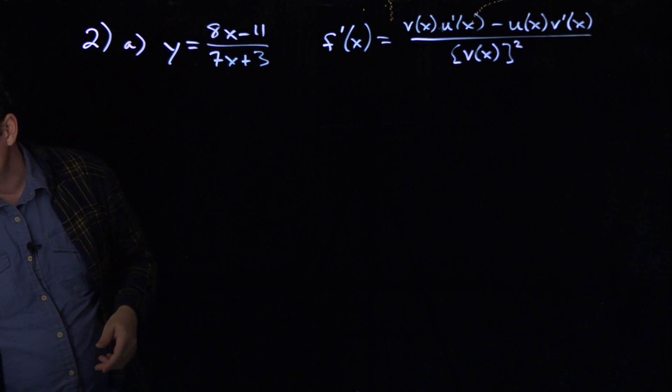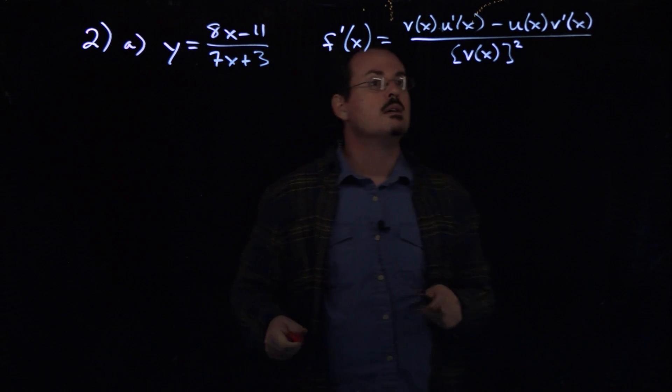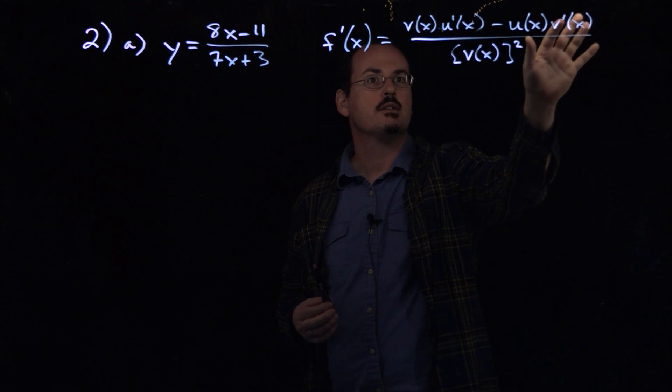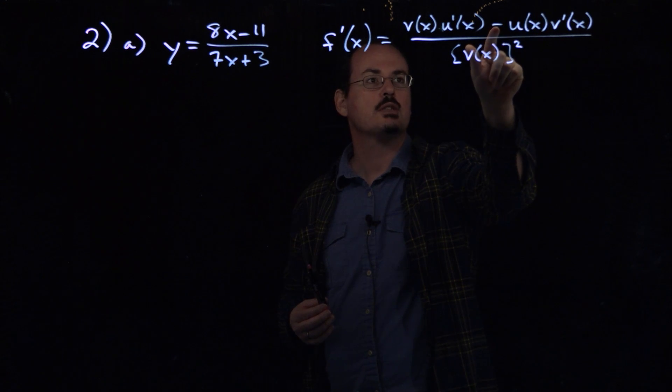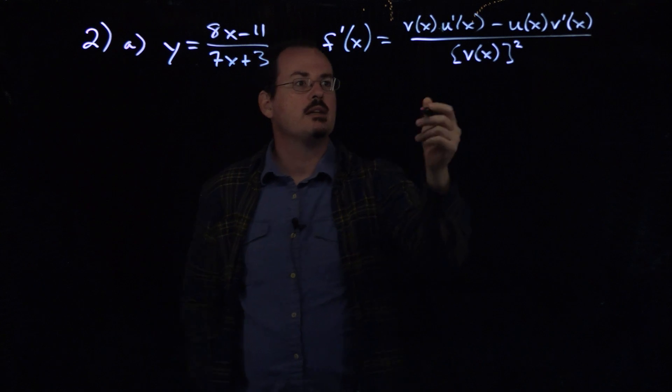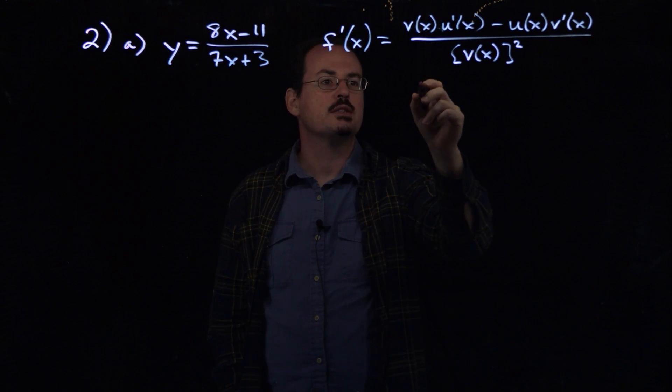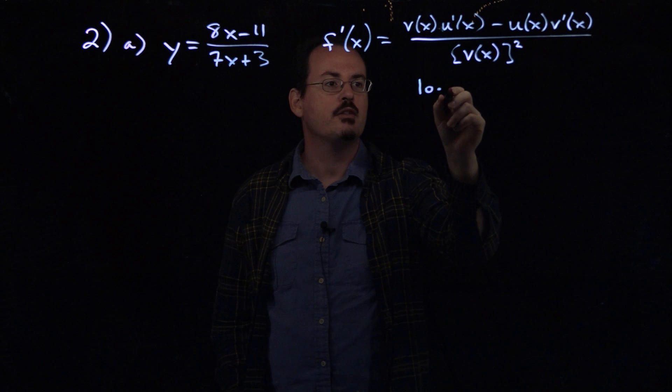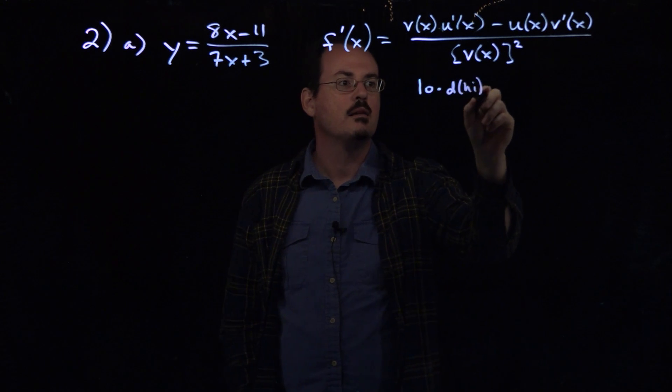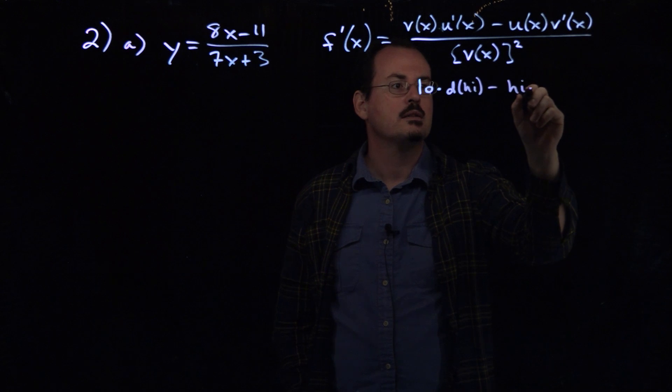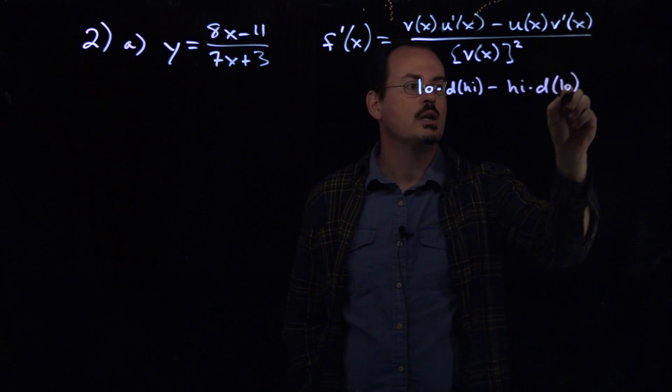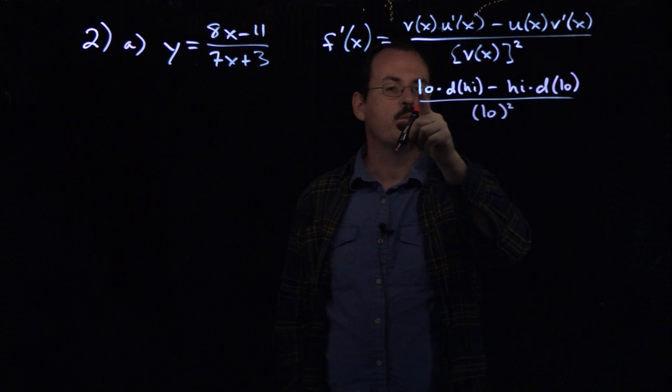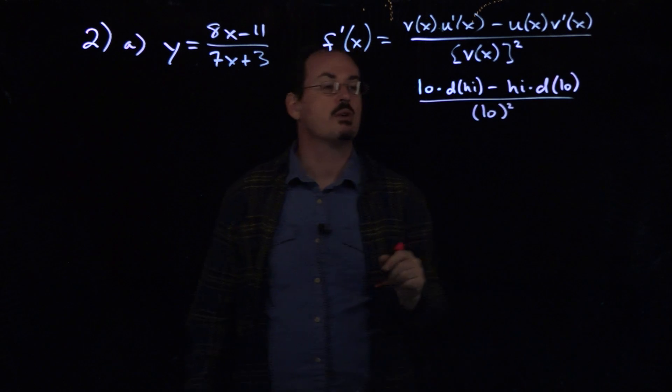All right, so notice that in the numerator of the quotient rule, it really matters that you get this order correct here. It doesn't matter so much in the product rule because that's a plus sign there. The way that I kind of sometimes tell my students to remember this is a little memory aid. The quotient rule really says this: low times the derivative of the high function, so d high, minus high times the derivative of the bottom function, that's d low. And then of course, this is all divided by the low function squared. So if you want to remember it like this, low d high minus high d low, and then the low squared in the denominator.